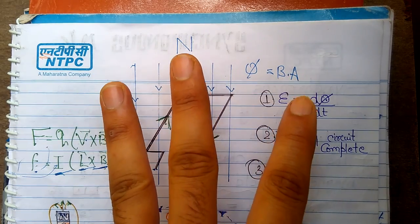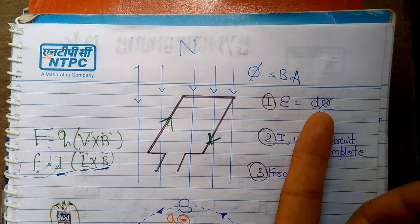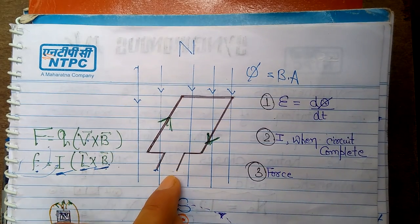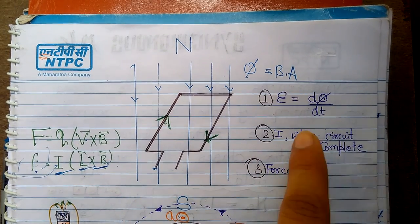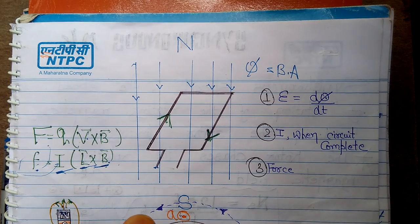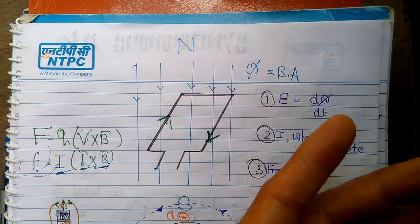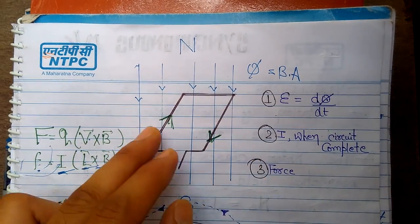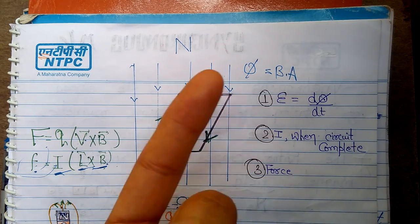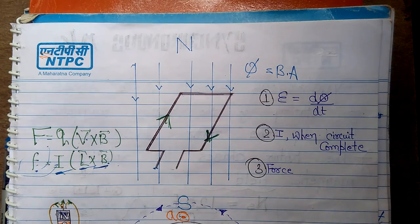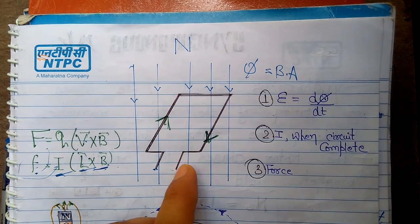Before we jump further, I want you to understand three laws before you study any electrical machine. Number one is Faraday's law: e = dΦ/dt. That means if I have a cylindrical conducting coil placed in a magnetic field and I change the magnetic flux with respect to time, an EMF will be induced in the coil. Since Φ = B·A, you can either change B or change A, or have relative motion between the coil and the magnetic flux — either rotate the coil or rotate the flux — and EMF will be induced.